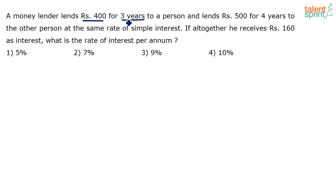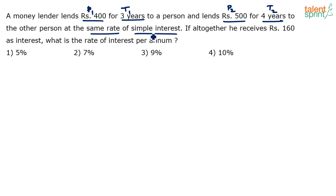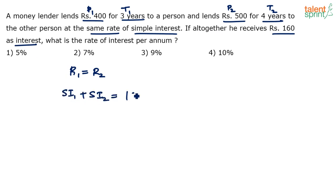He lent rupees 400 for three years — so P1 = 400, T1 = 3. He lends another rupees 500 for four years — P2 = 500, T2 = 4 — to another person at the same rate of simple interest, meaning r1 equals r2. Altogether he receives rupees 160 as interest, so SI1 plus SI2 equals 160.